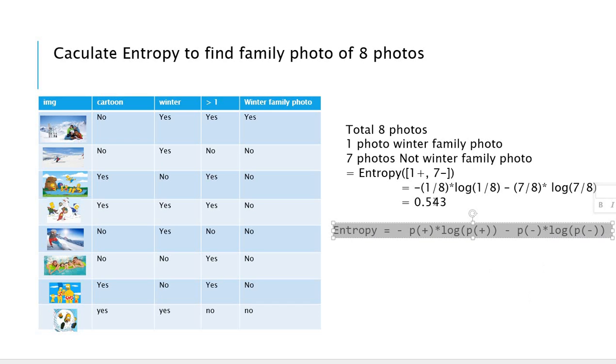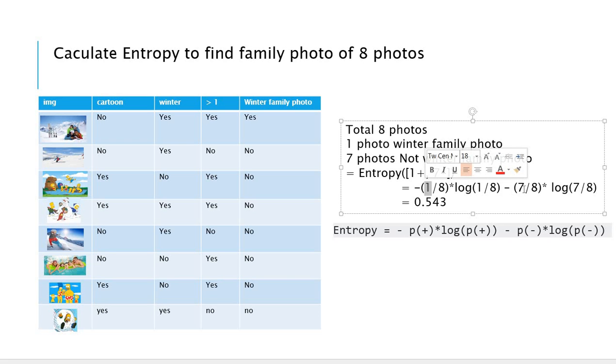According to this formula, we can calculate the entropy. We can denote the entropy one plus and seven minus because we have just one winter family photo and seven which is not the winter family photo. Here the denominator eight is total picture count and one means one winter family photo and seven stands for the other pictures. After we calculate this one, the base status entropy is 0.543.